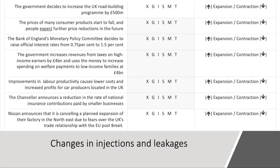Here's our second set — another seven examples, fourteen in total. Press pause if you want to have a go yourself. There are a couple here that are really quite tricky. The first one: the government decides to increase the road building program — motorways and bypasses — by 500 million pounds. That's really an increase in government spending, which will be expansionary — an increase in fiscal stimulus.